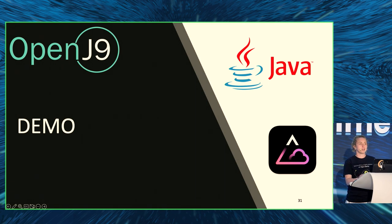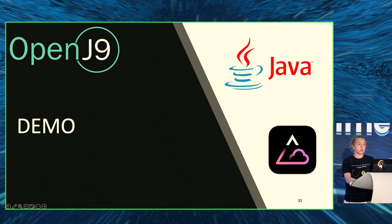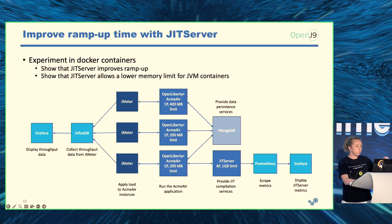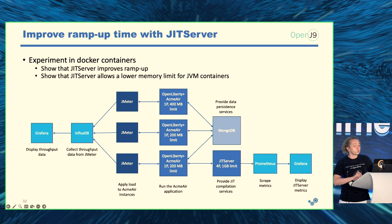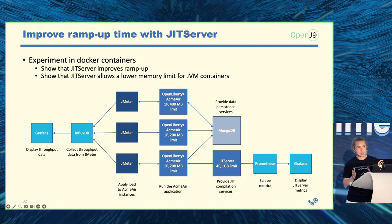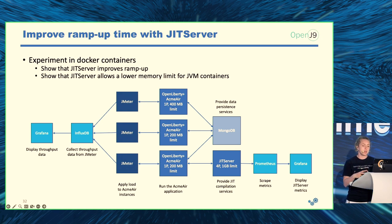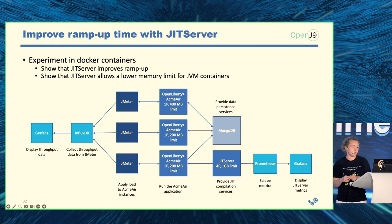I have pre-recorded this demo because it went wrong the other day. The purpose of this demo is to show that in a constrained container environment, JIT server does improve ramp-up time and allows JVM containers to run with less memory.